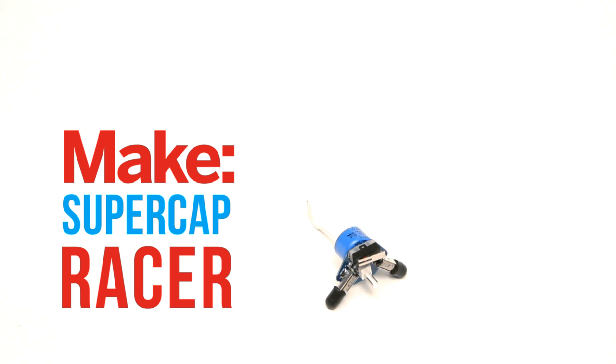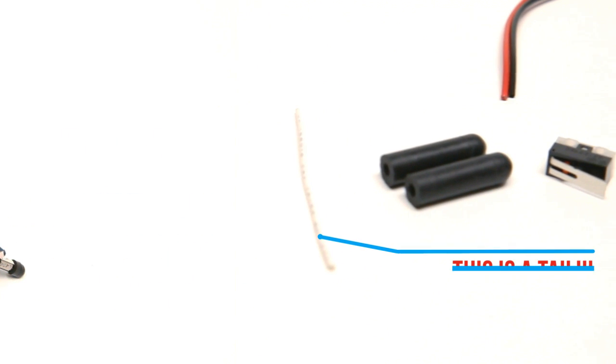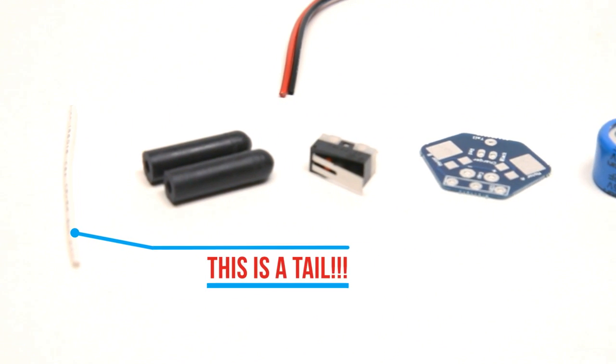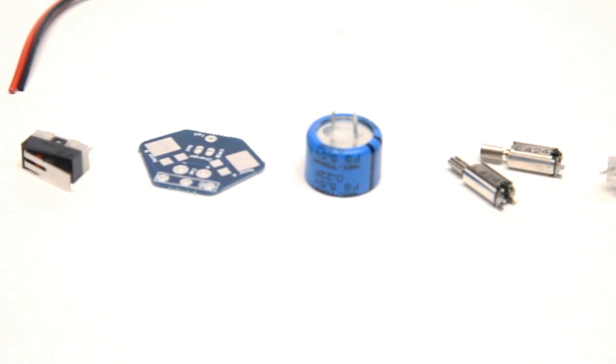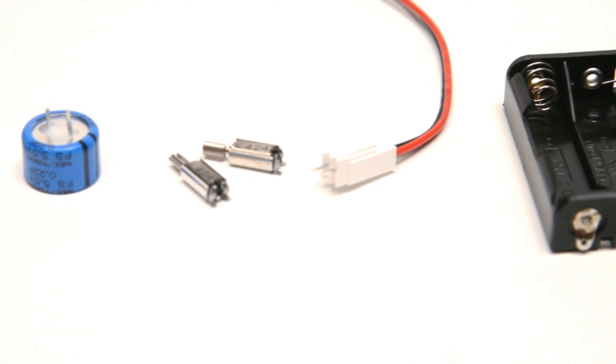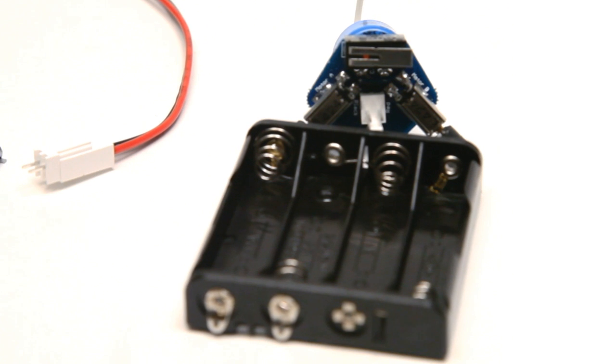The Super Cap Racer Kit contains a small wire, two rubber caps, a switch, the printed circuit board or PCB, a super capacitor, two motors, power supply wires and its connector, and a battery pack.